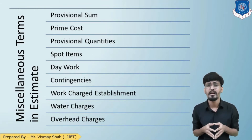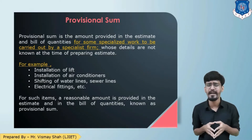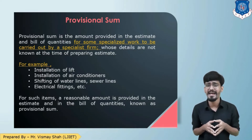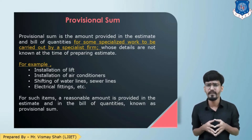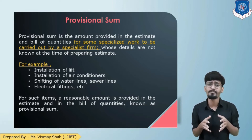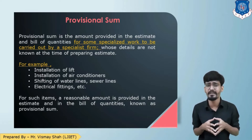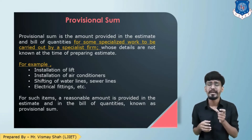Let us begin with the provisional sum. It is the amount provided in the estimate and the bill of quantities for work which is to be carried out by some special contractors, and their works are of some special nature. For example, installation of lift, installation of air conditioning, or some of the major electrical fittings. These are works to be completed by the specialized contractor, and we are not aware about certain details of it while preparing the estimate. So we can provide a provisional sum for such kind of work.